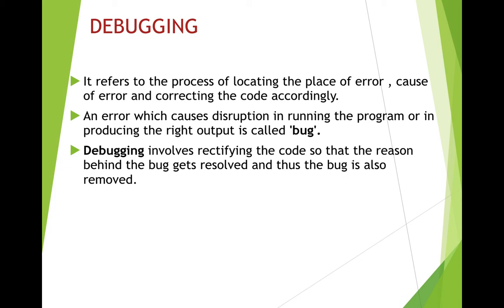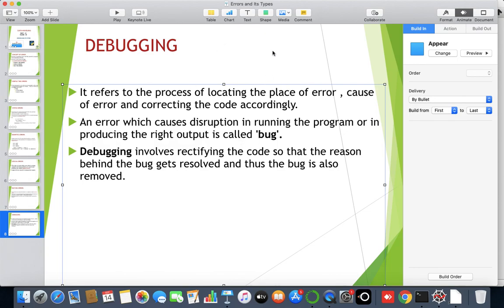To debug, you need to know the reason behind the bug. For example, if you run a Python program in front of someone who doesn't know Python, they may see the error but cannot debug it — they won't know the place of error or the cause. You will learn the cause of errors as you dig deeper into Python. The more efficiently you learn any programming language, the more efficient you will be at debugging. Debugging is a very essential skill for programmers. That's all for today — I hope this session was useful. Thank you very much.